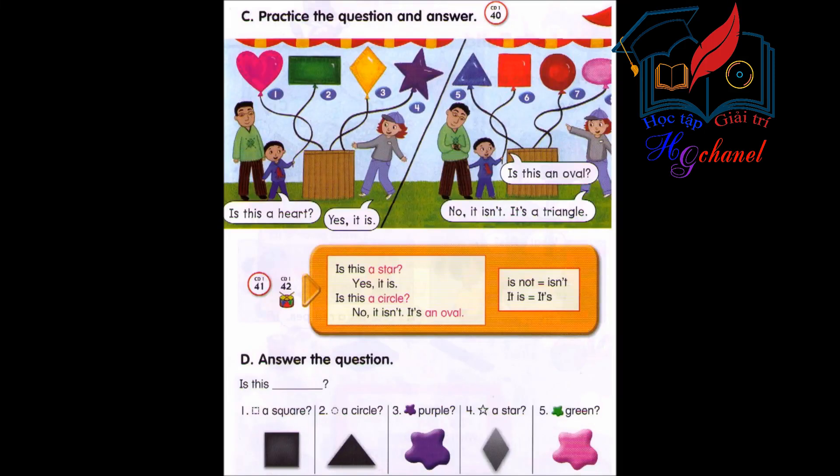Track 40. C. Practice the question and answer. Is this a heart? Yes, it is. Is this an oval? No, it isn't. It's a triangle.